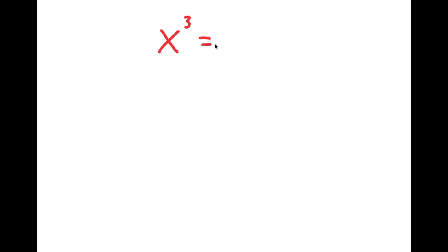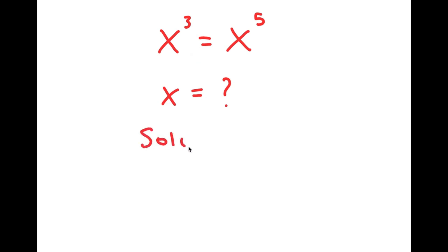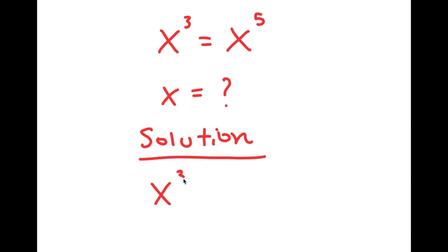In this video, I'm going to be solving the equation x to the power of 3 is equal to x to the power of 5. My only variable in this equation is x, so that's what I'm going to be solving for. I'm going to rewrite my equation down here so I have a little more solving space: x to the power of 3 is equal to x to the power of 5.